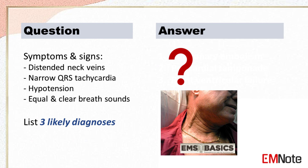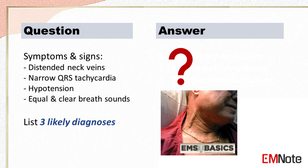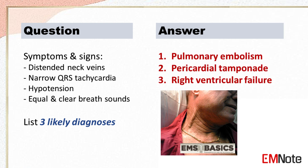List three likely diagnoses that may cause the following symptoms and signs: distended neck veins, narrow QRS tachycardia, hypotension, and clear equal breath sounds. The three likely diagnoses are pulmonary embolism, pericardial tamponade, and right ventricular infarction.